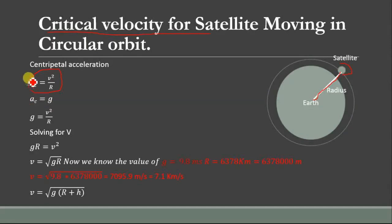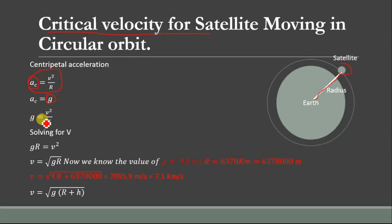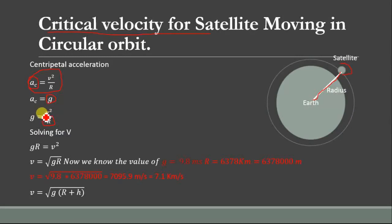If we replace AC with G, the gravitational acceleration, then this equation becomes G = V² / R. From this equation we can see that G is inversely proportional to the radius. It means when we increase the radius, the value of G decreases, and when G decreases we need a lower velocity to keep the satellite in orbit.